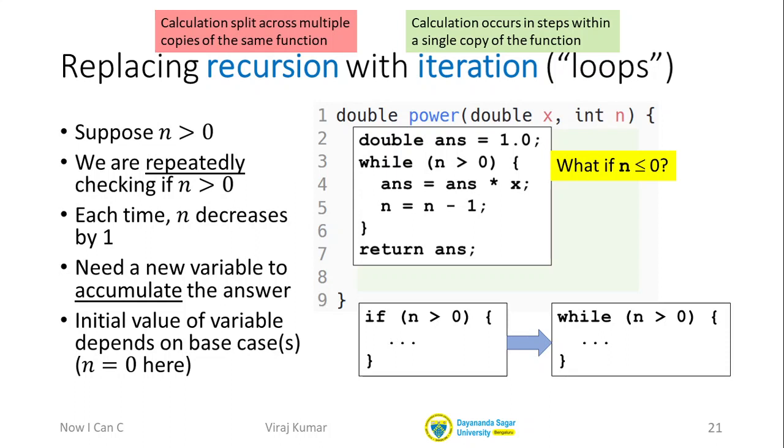Now ans is initialized to 1 on line 2, and so this function will return 1 when n is negative or 0. So the answer 1 is the right answer if n is 0, but if n is negative, then almost certainly this is the wrong answer. I leave it to you to figure out how to fix this bug to work for all values of n.